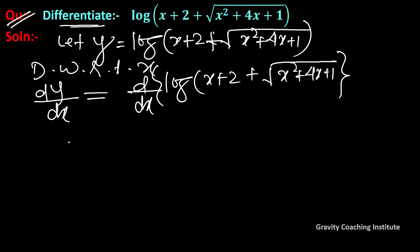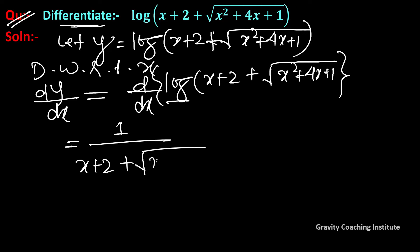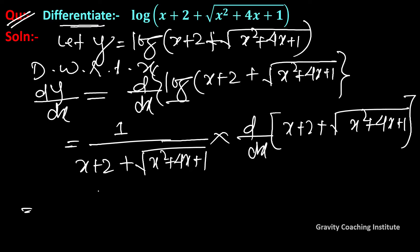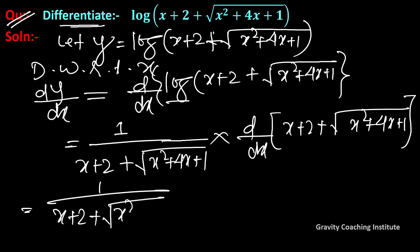Using the chain rule for log differentiation: 1 upon (x + 2 + √(x² + 4x + 1)), multiplied by the differentiation of (x + 2 + √(x² + 4x + 1)).